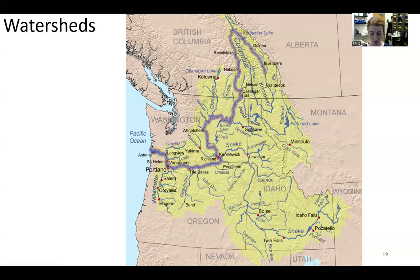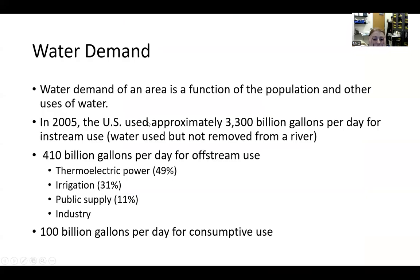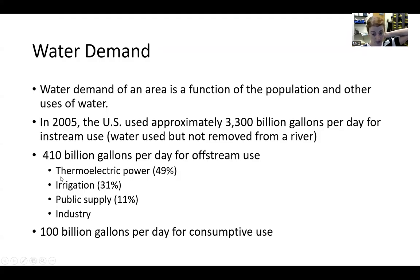So those are our main water systems regarding our local area — Washington and the Salish Sea region. Water demand of an area or region is a function of the population and other uses of water. In 2005, the US used approximately 3,300 billion gallons per day for in-stream use — water used but not removed from a river. We used 410 billion gallons for off-stream use, which went to thermal electric power, irrigation, public supply, and industry. And then 100 billion gallons per day for consumptive use — drinking water, bathing water, dishwasher water — the water we use in our homes.